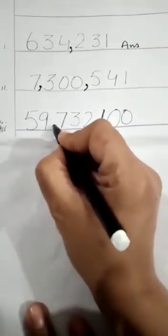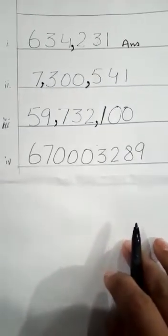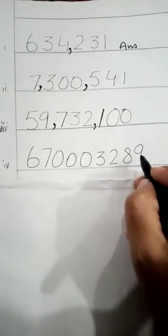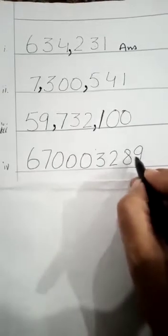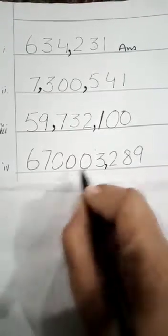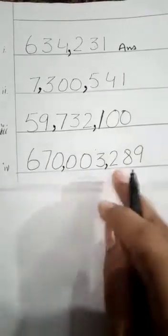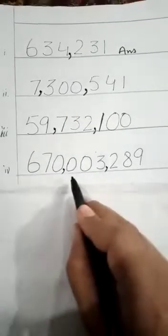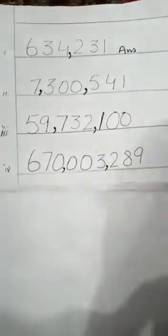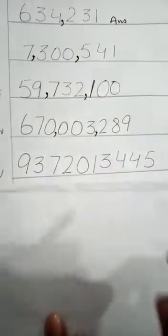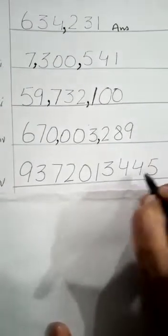For question number three, count the numbers from the right-hand side: one, two, three — put comma; one, two, three — put comma. This question shows three families: the hundred family, the thousand family, and the million family.